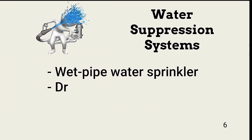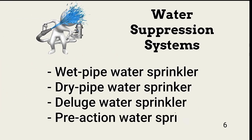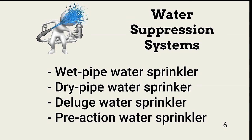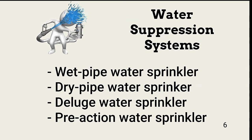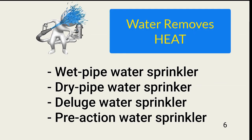Water systems are the most common in business environments. There are four types: wet pipe, dry pipe, deluge, and pre-action. We use water to remove heat from a fire.